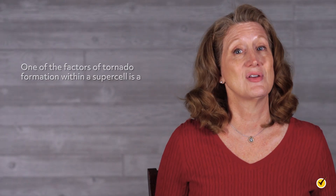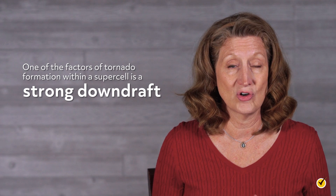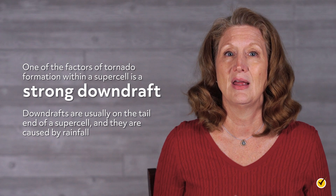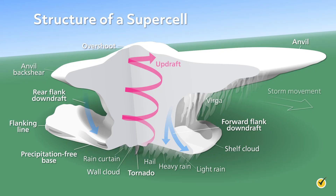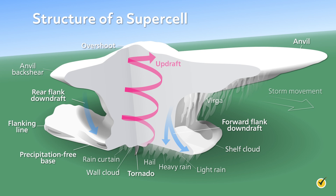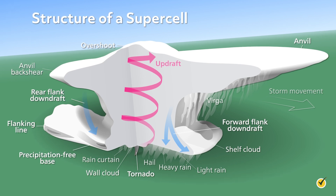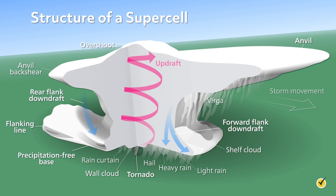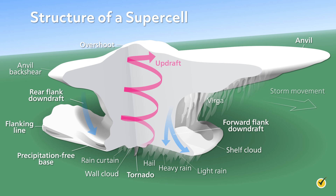One of the factors of tornado formation within a supercell is a strong downdraft. Downdrafts are usually on the tail end of a supercell, and they're caused by rainfall. You can see the downdrafts here noted by the downward blue arrows. These cold, dense downdrafts will eventually focus the rotation of the supercell and potentially force it to the ground, creating the tornado.